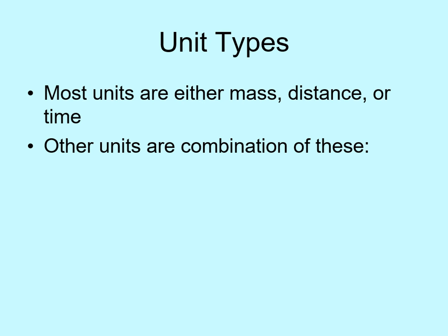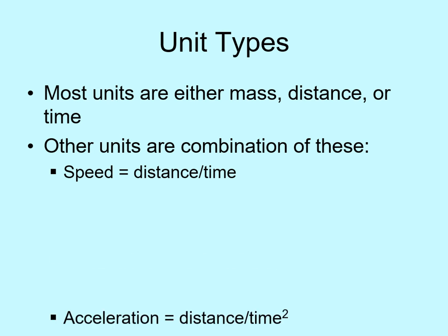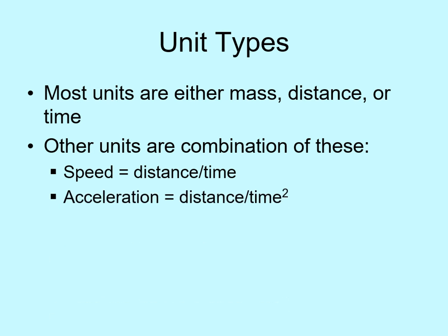For example, what about speed? Think about a typical speed unit: miles per hour. Miles are distance units, hours are time units, so miles per hour is just a distance divided by a time. Similarly, acceleration is distance divided by time squared. We'll work with this one more in a couple of chapters.